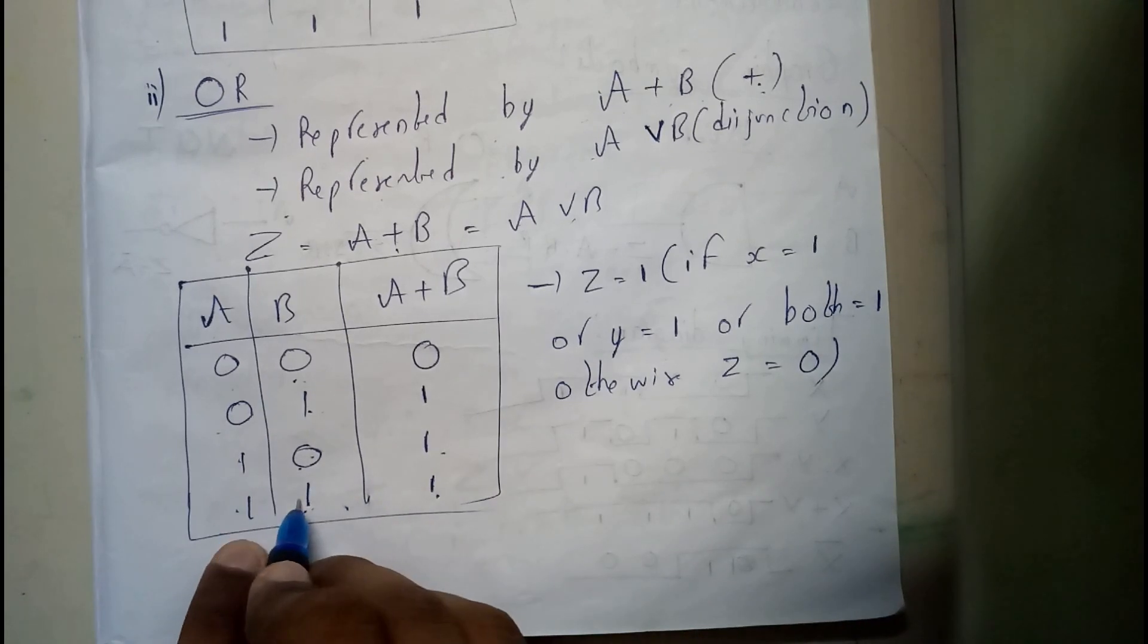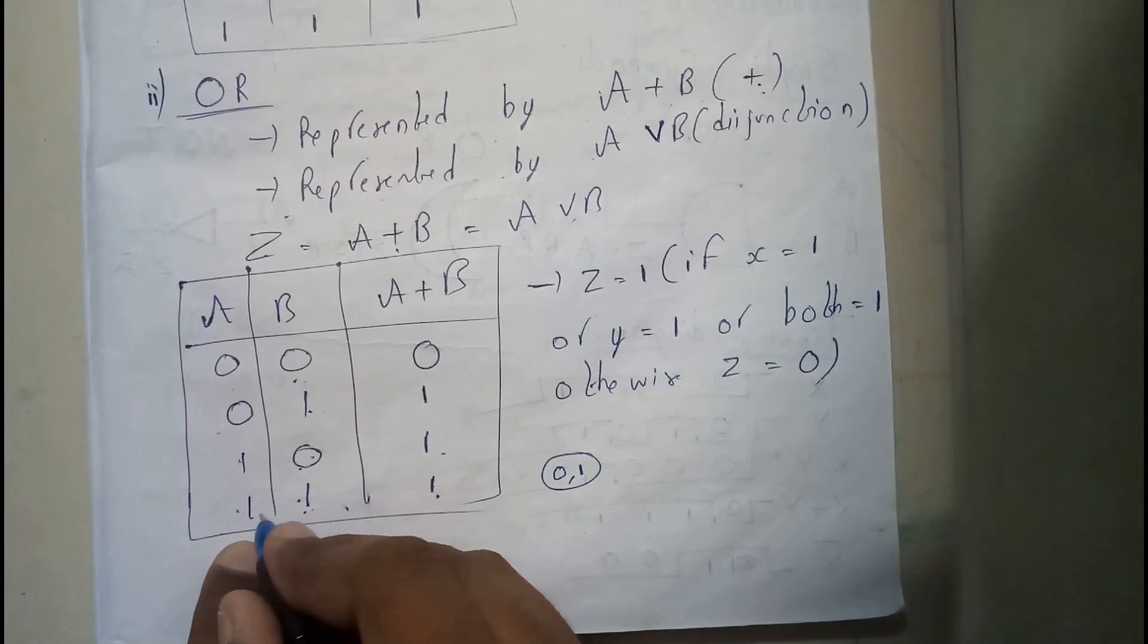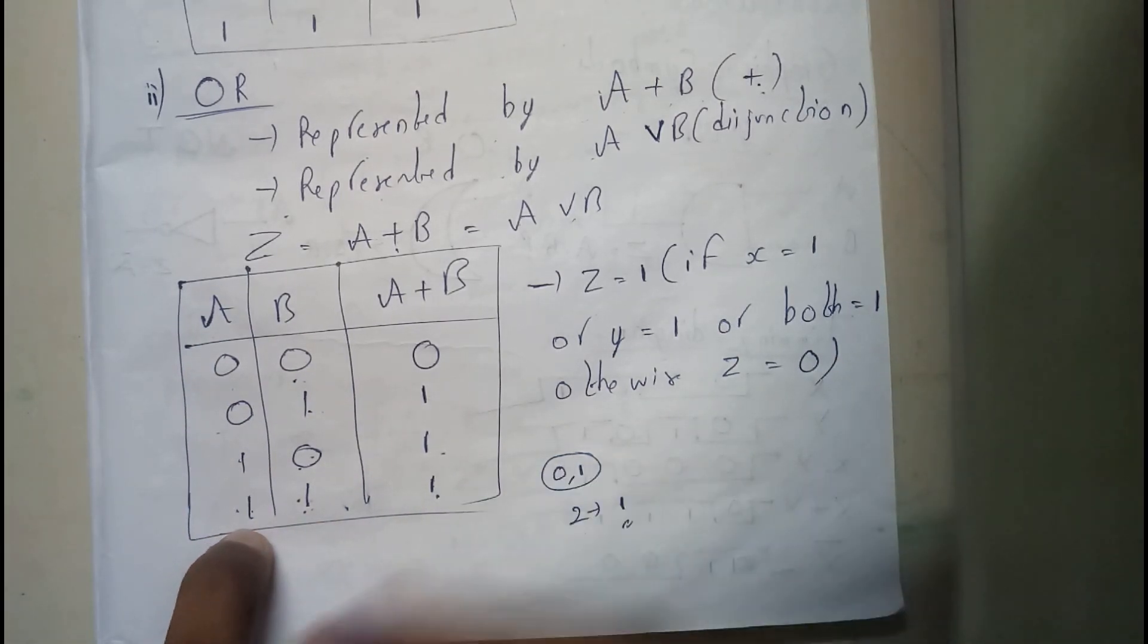1 plus 1 is 1 only because in computer language we are having only 0s and 1s. So as 1 plus 1 reaches 2, we will be writing it as 1.